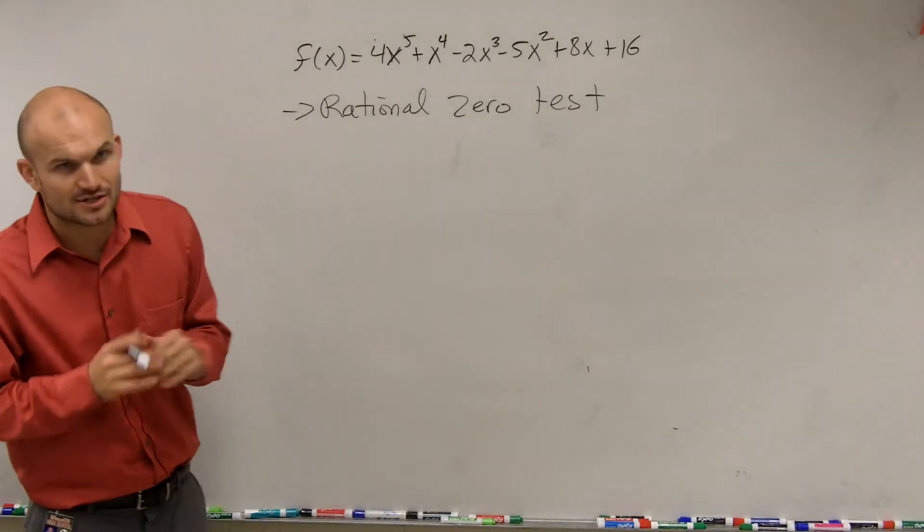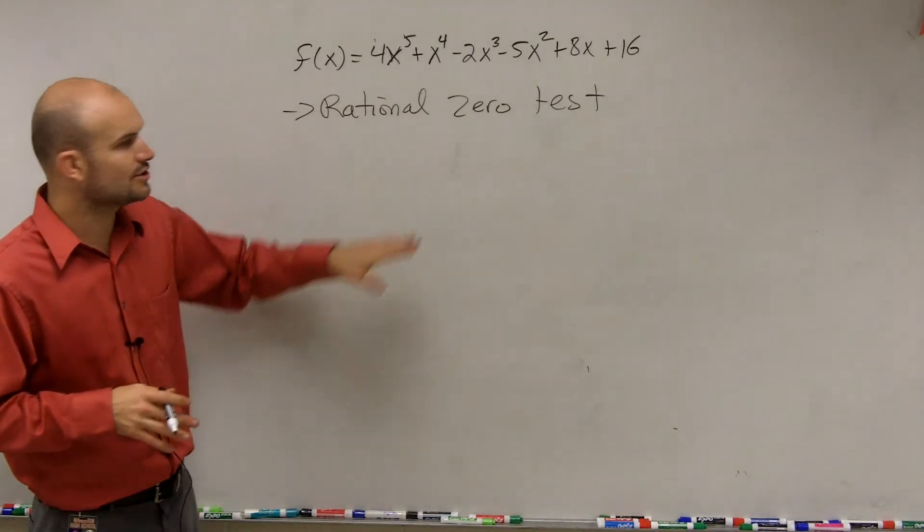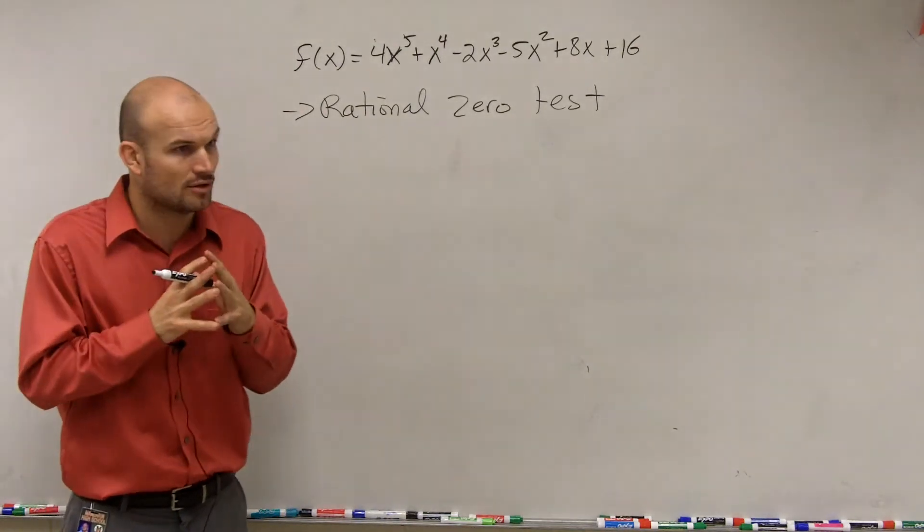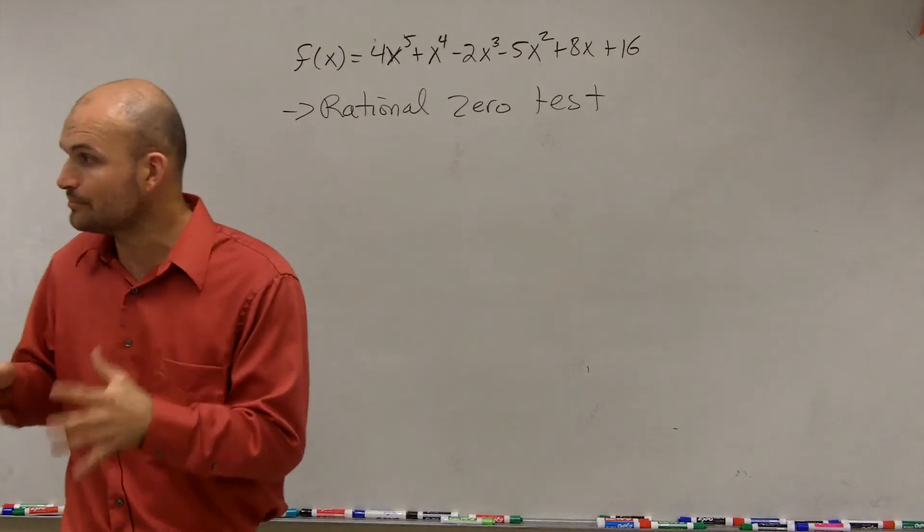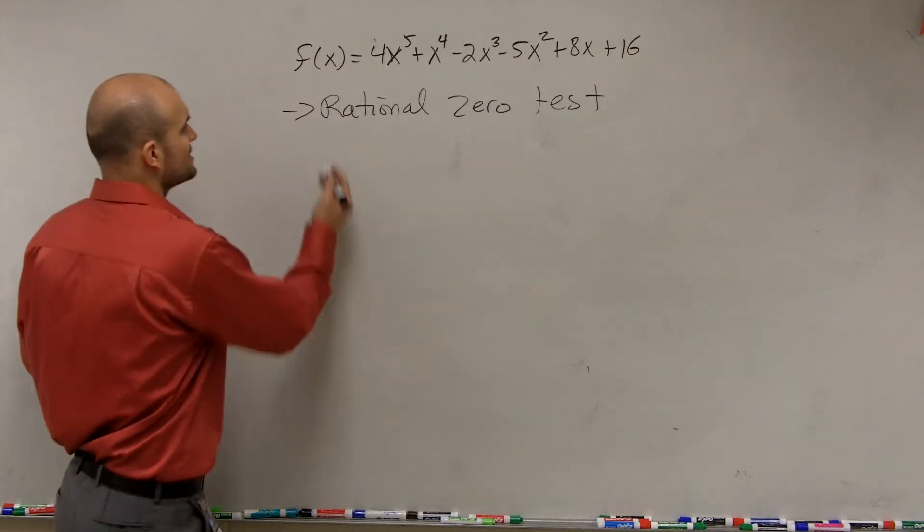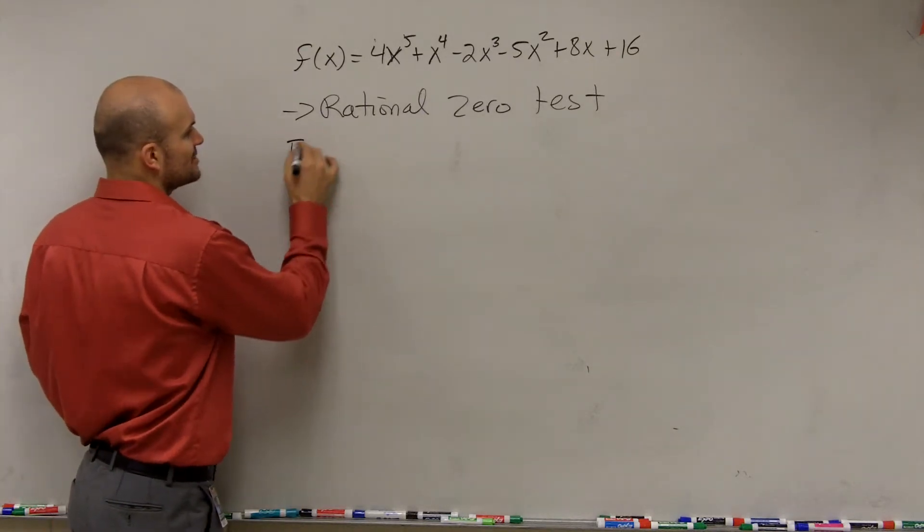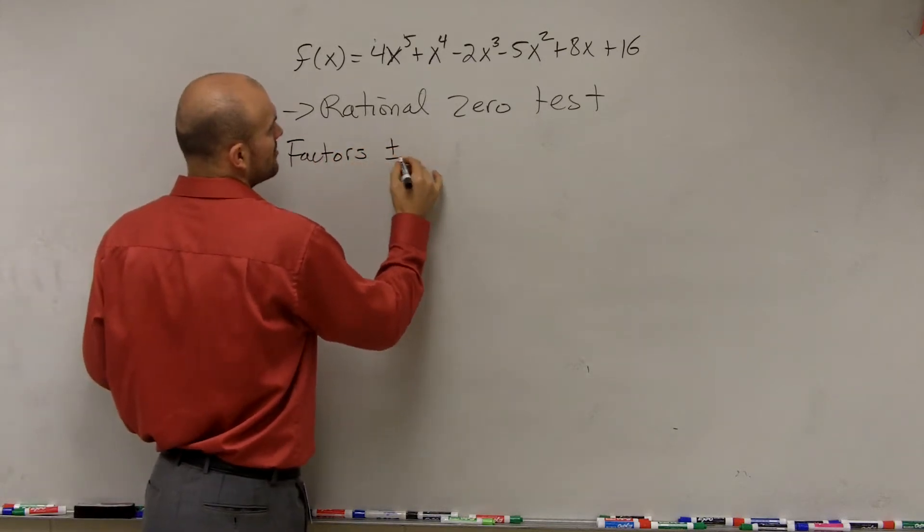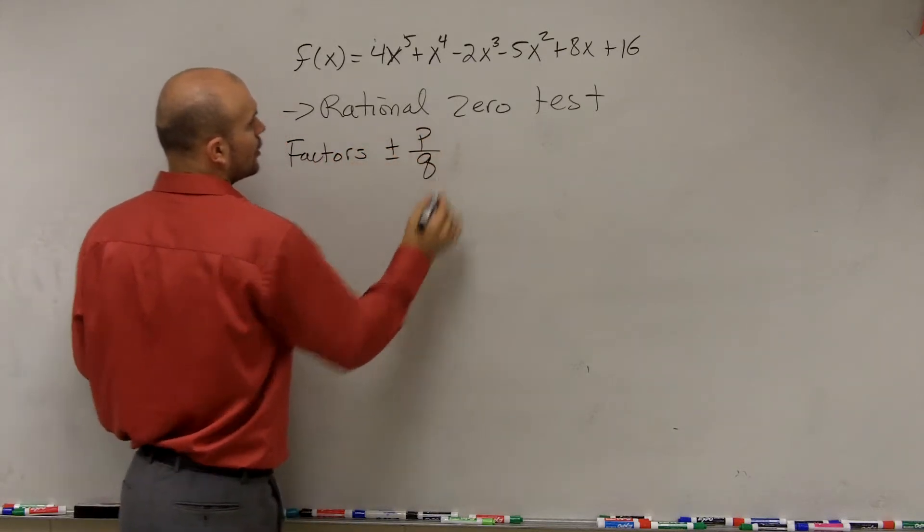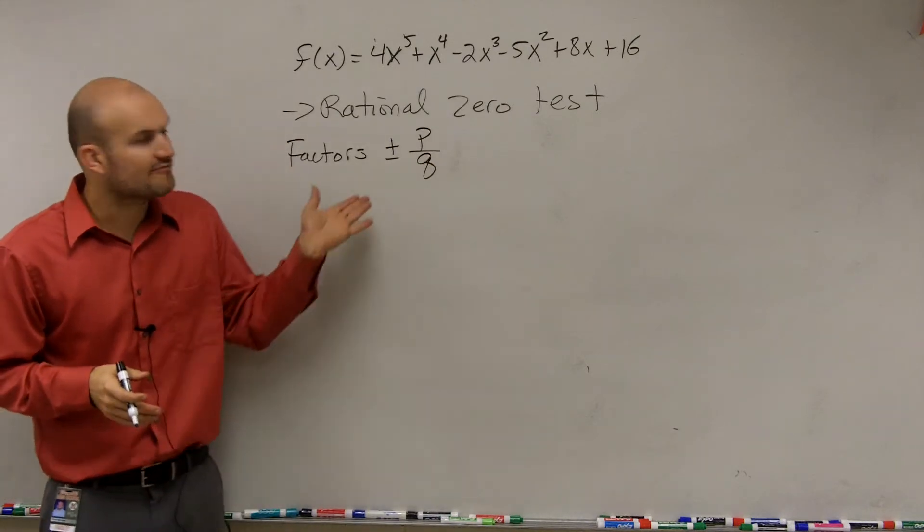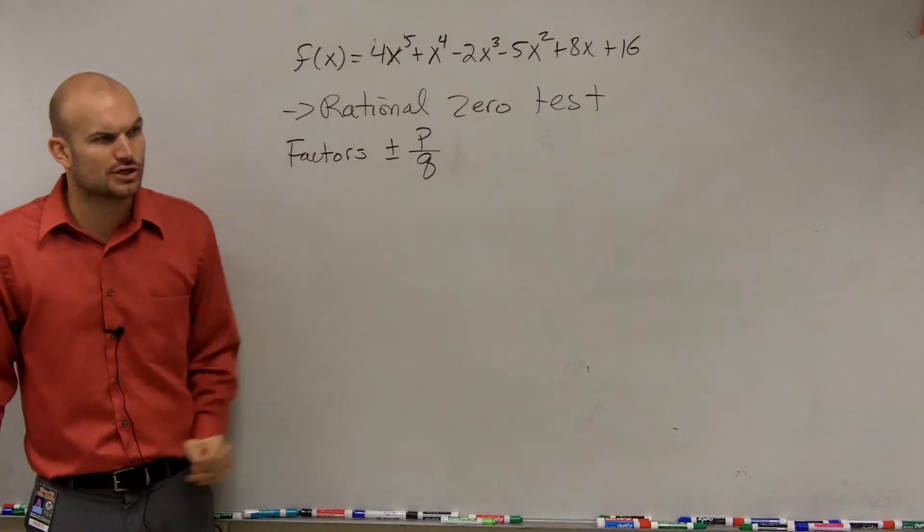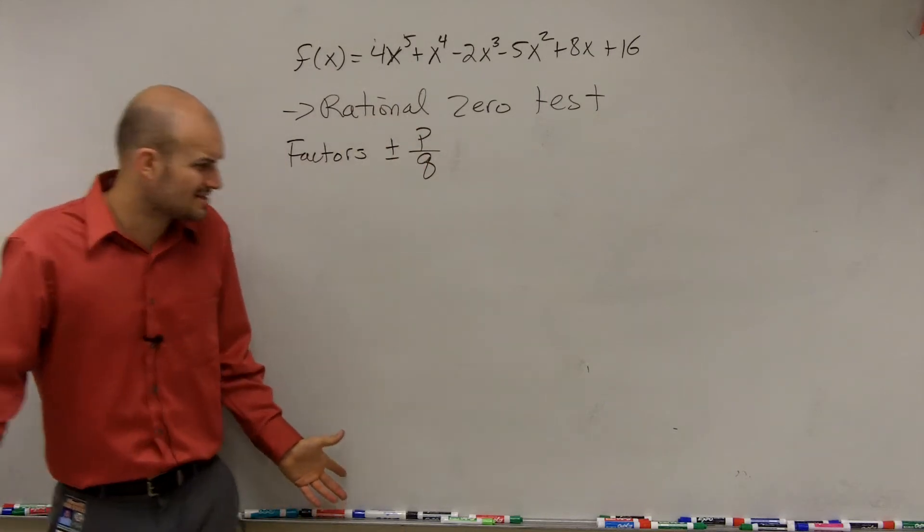So to find the rational zero test, what we're going to do is the rational zero test, all rational zeros, or all possible rational zeros in simplest form, come into taking the factors of plus or minus p over q. So it's the factors of your p over, plus or minus, your p over your q. So then you say what is p and q?